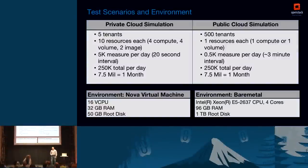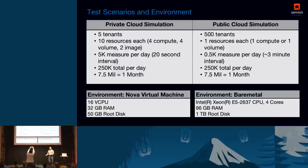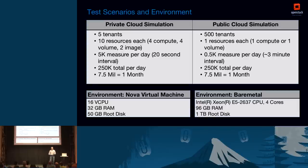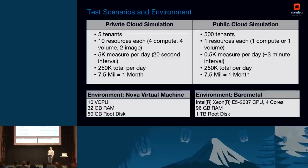We decided to do some performance tests simulating private cloud versus public cloud scenarios. For the private cloud we used 5 tenants with 10 resources each — divided into 4 compute, 4 volume, and 2 image. For the public cloud we used 500 tenants with 1 resource each, both totaling 7.5 million measurements. We had two test environments: a virtual machine with 16 CPUs and 32 GB RAM (bottlenecked by 50 GB root disk), and a bare metal server with 96 cores and 1 TB of RAM where we could run the full 7.5 million load.